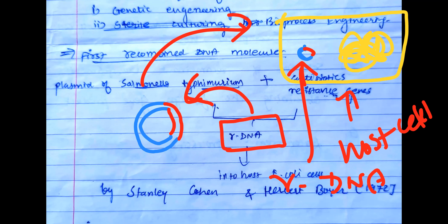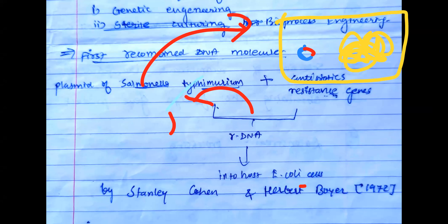This recombinant DNA could make E. coli survive against antibiotics, although normally E. coli cannot survive against antibiotics — it has no antibiotic resistance genes. It is recombinant DNA technology that can do this kind of miracle — introduce characters into organisms which never existed before. That is the importance of recombinant DNA technology.